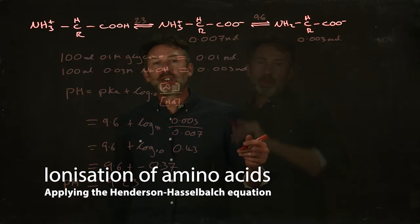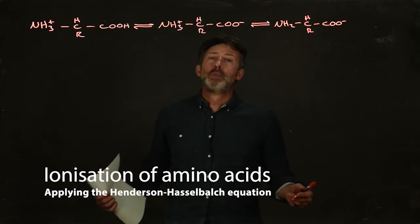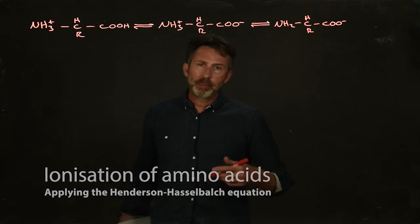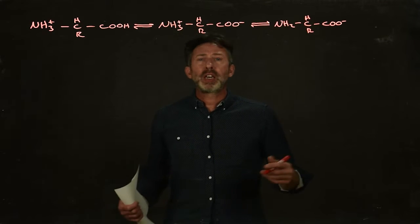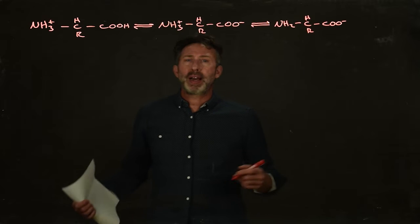Most molecules in biology have more than one group that can ionize, and amino acids and proteins are great examples of this. Let's look at what happens to an amino acid when the pH changes.